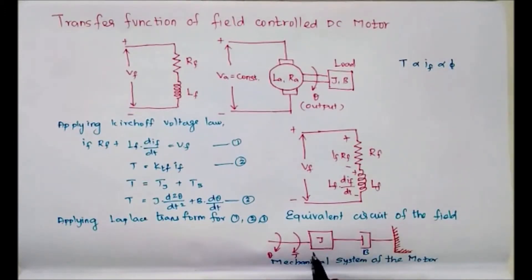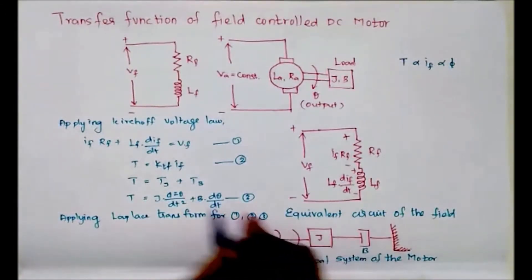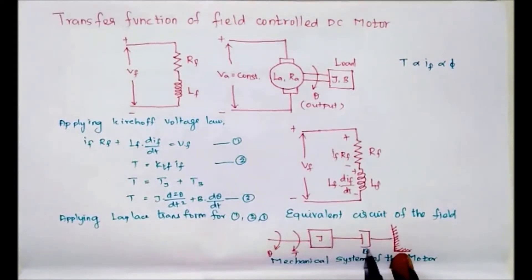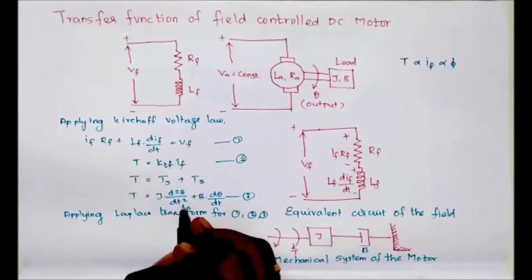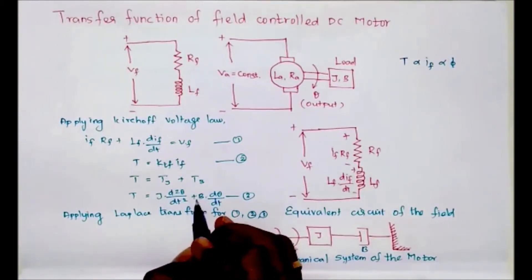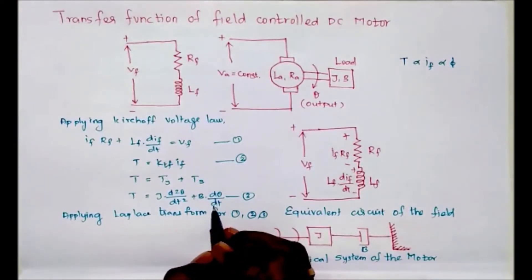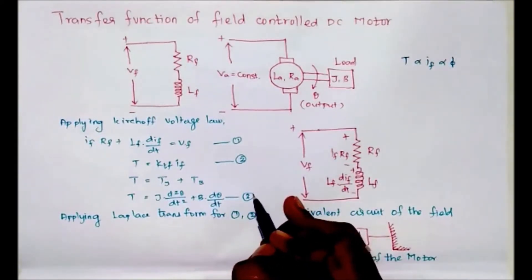According to the force-torque balance equation, the sum of torques acting on a system equals zero. The applied torque equals the opposing torque due to moment of inertia plus opposing torque due to the dashpot. We know: torque due to inertia = J·(d²θ/dt²) and torque due to dashpot = B·(dθ/dt). We consider these as equations one, two, and three.